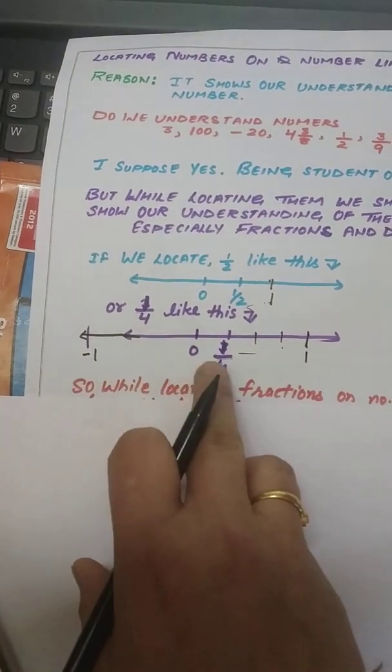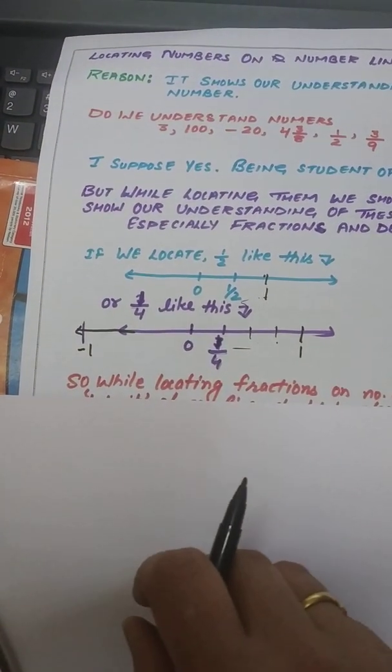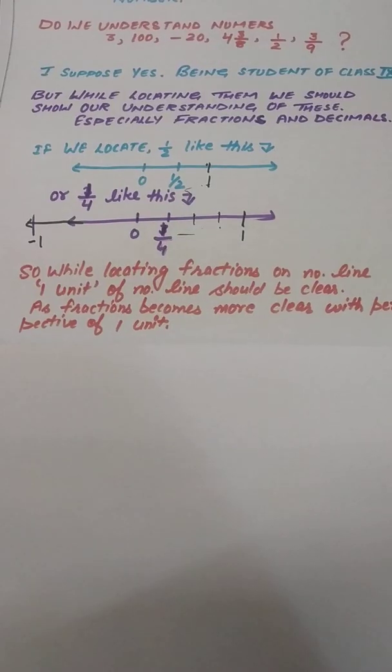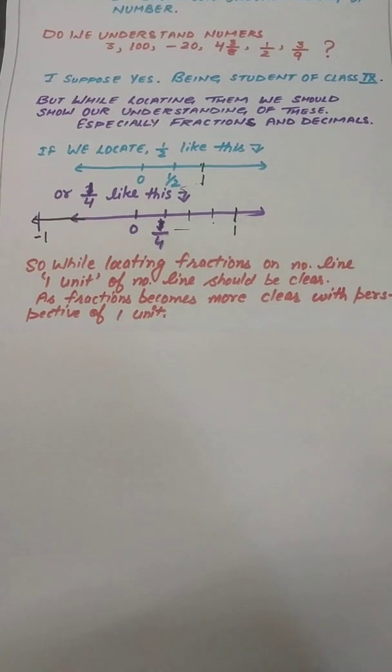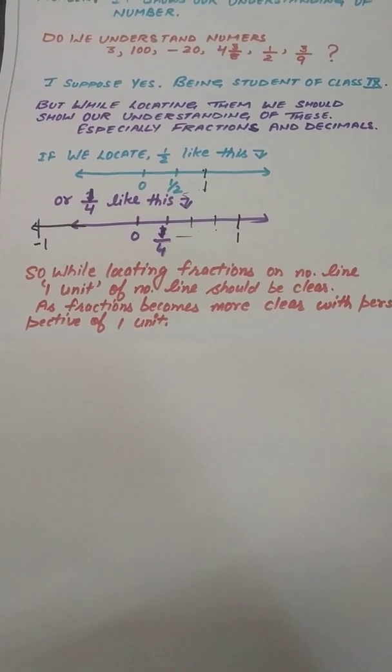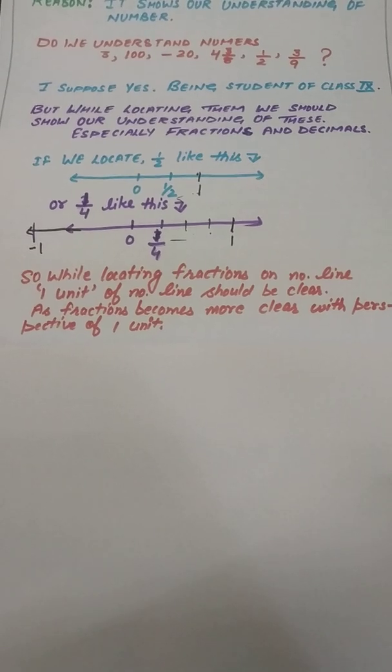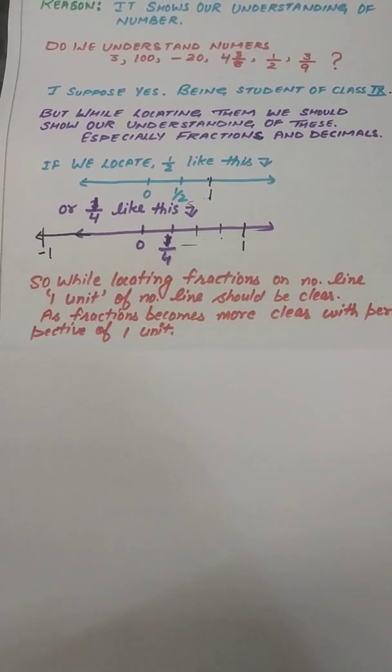This is one unit, this is one unit, this is one-fourth. So while locating fractions on number line, one unit of number line should be clear. As fractions become more clear with perspective of one unit, I've explained you before.